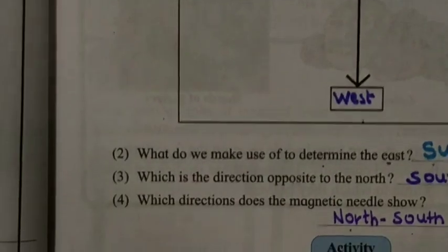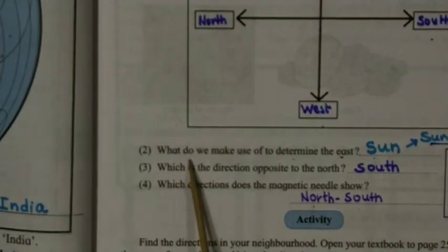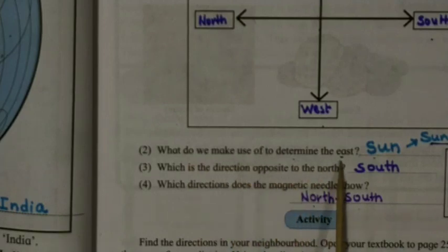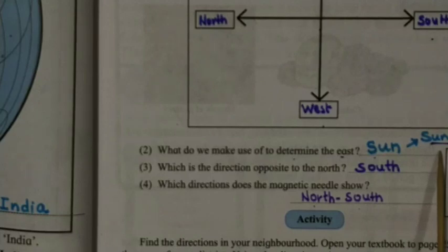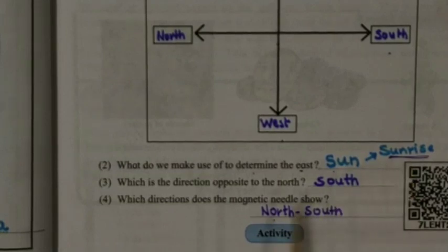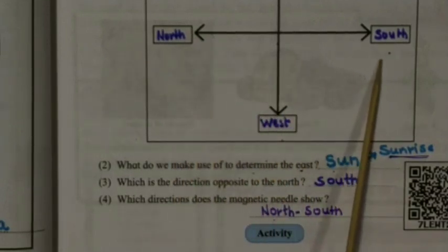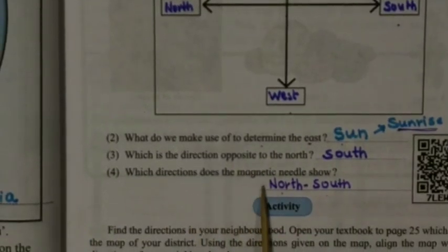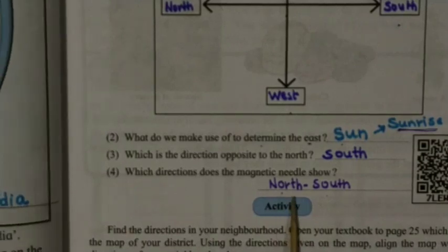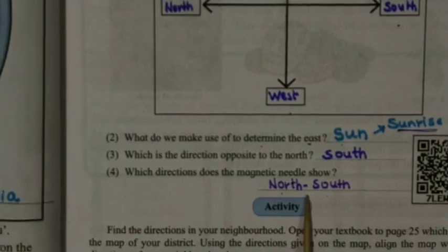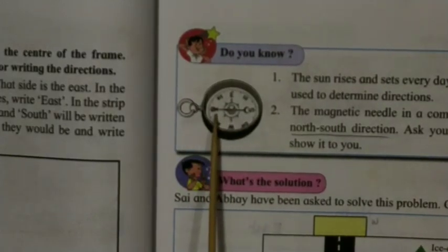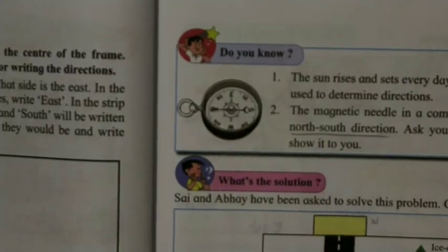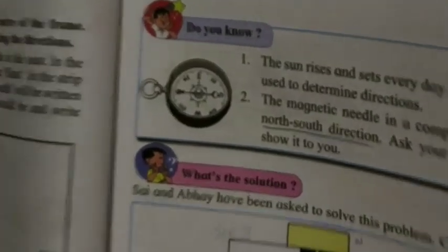Now some review questions. First: what do we use to determine the east? We determine east by the sun — from the place where the sun rises, we call it east. Second: which direction is opposite to the north? The answer is south. Third: which direction does the magnetic needle show? The magnetic compass needle shows the north-south direction.